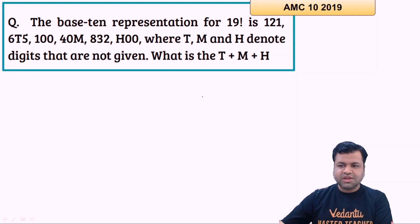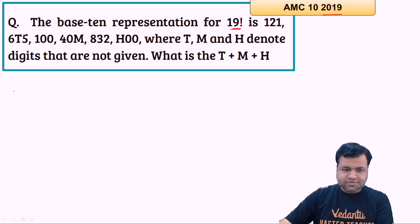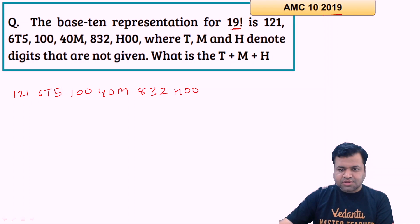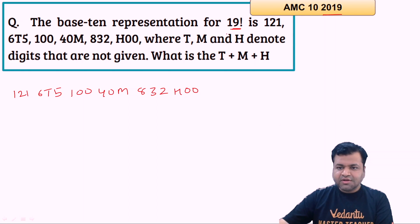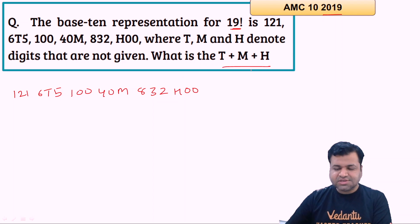This is the first question. If you haven't tried it yet, kindly pause the video and give it a try. The question is from AMC 2019 and says: the base-10 representation of 19 factorial is 121,6t5,100,4m,83,2h,00 — where t, m, and h are some single digits that we need to find. We need to find t plus m plus h.